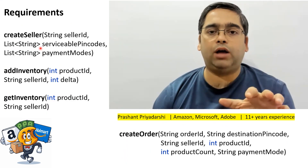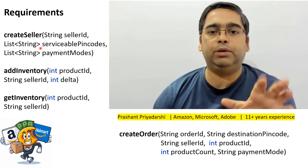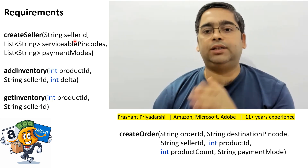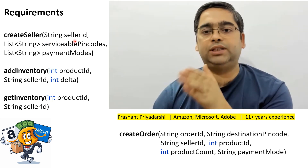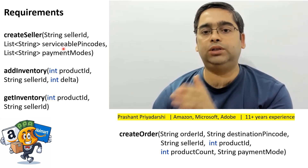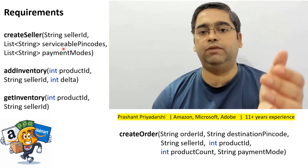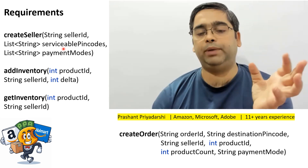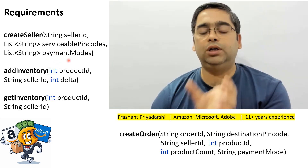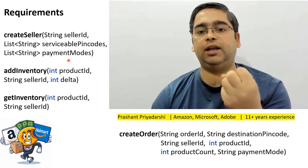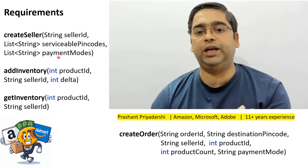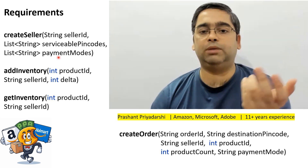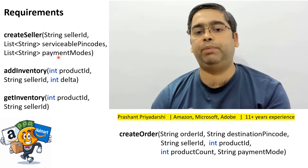Let's go through the different requirements our system should support. First, the system should be able to add new sellers, with each seller given a globally unique seller ID. There will be a list of pin codes where the seller can deliver goods, since a single seller cannot deliver to every available pin code. There will also be payment modes — such as UPI, cash, net banking, debit card, or credit card — using which sellers can take payment from customers.